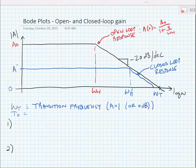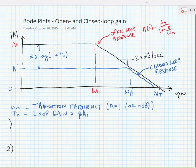Now, from this plot, we can also find a couple of other things. The difference between the DC open loop gain and the DC closed loop gain is equal to 20 log of 1 plus T sub 0. The term T sub 0, we call the loop gain. Remember, the loop gain is equal to beta times A sub 0.